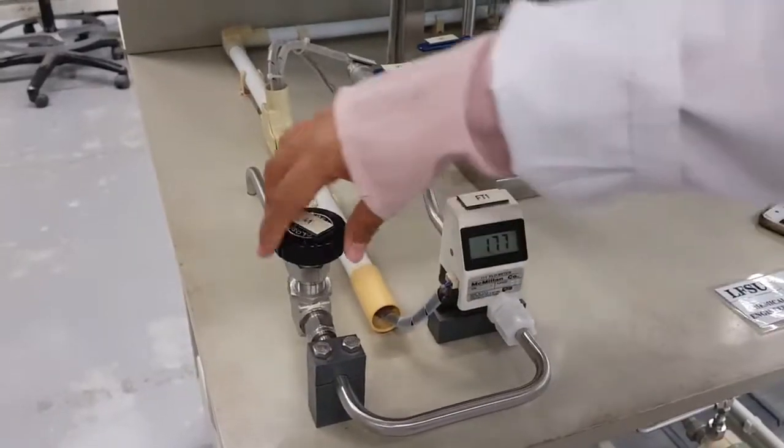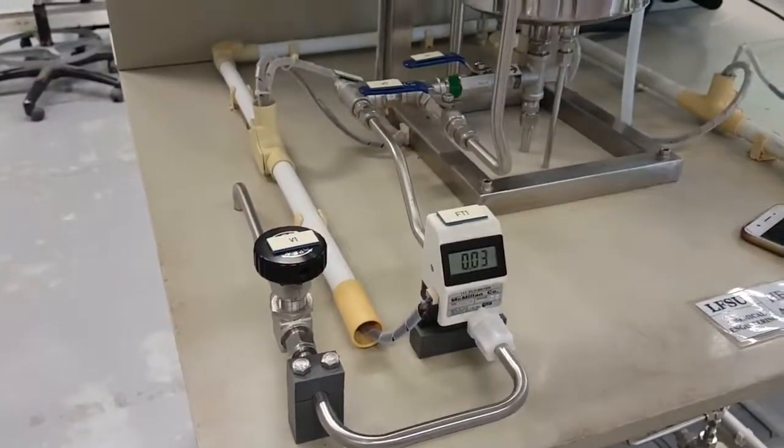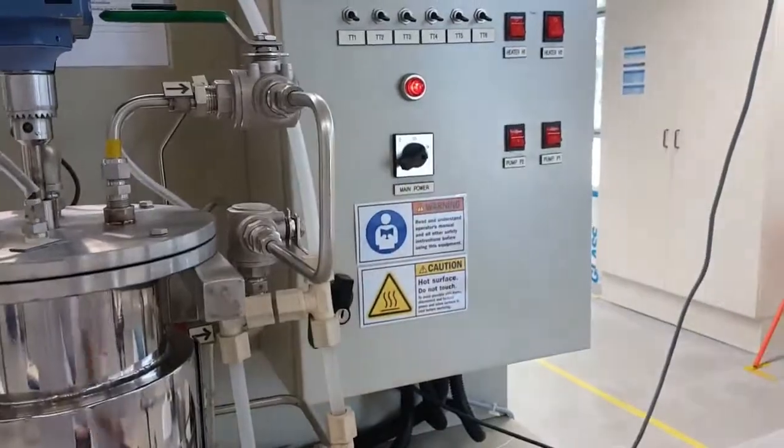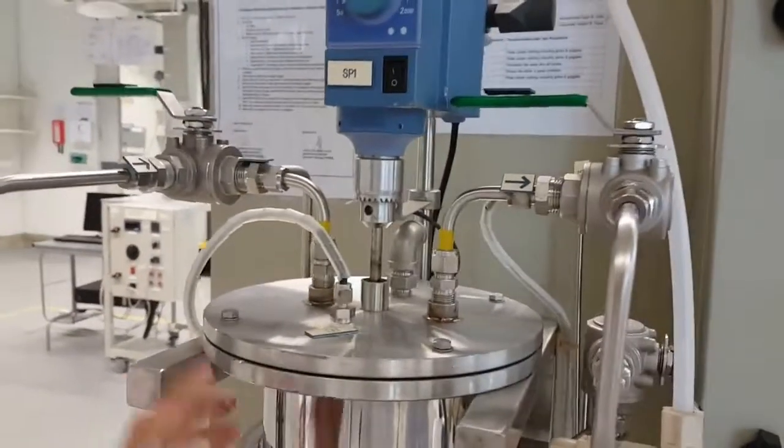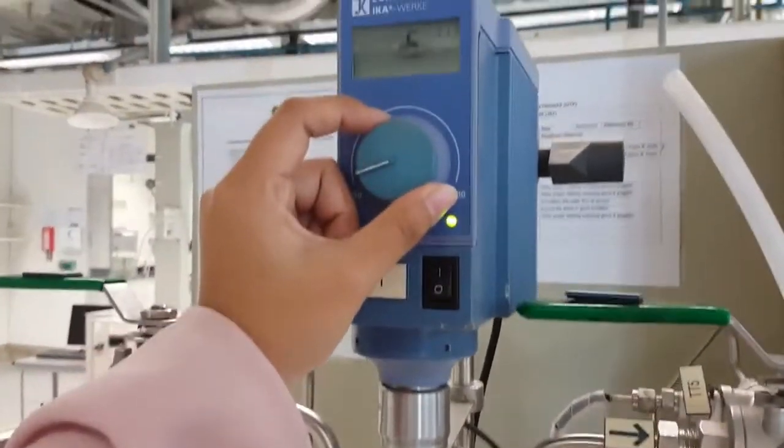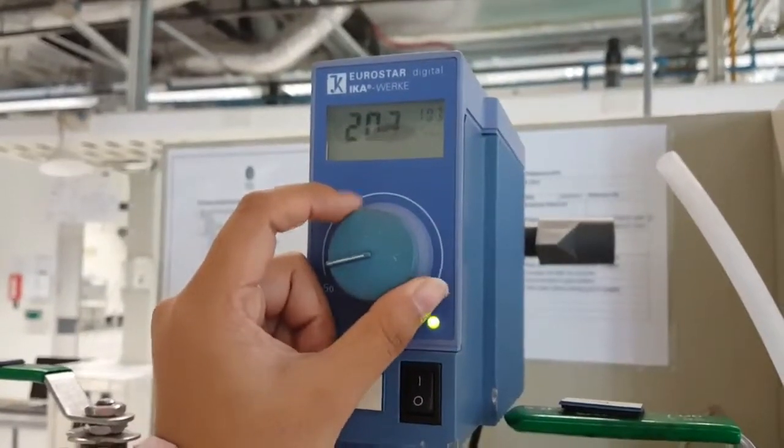Now, we close the valve. Switch off the pump. And before we heating the cold water, don't forget to switch on the stirrer and to increase it to your desired rotation per minute.